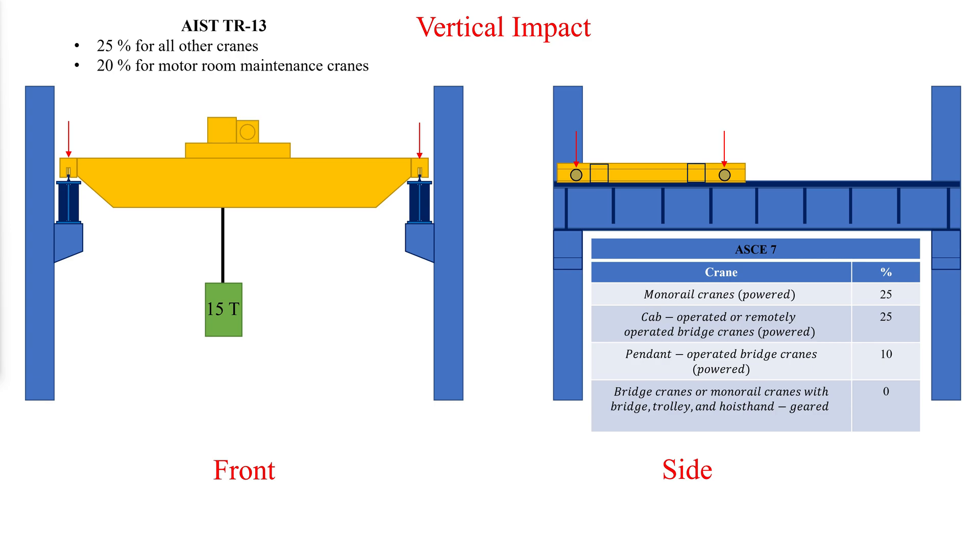While AIST-TR-13 sets the allowances for vertical impact as 25% of the maximum wheel loads for all crane types, except a 20% impact factor is recommended for motor room maintenance cranes. Impact loading should be considered in the design of column brackets regardless of whether ASCE 7-16 or AIST-TR-13 requirements are being used.